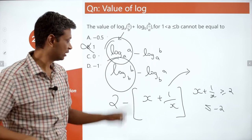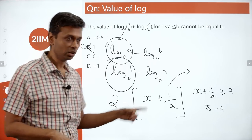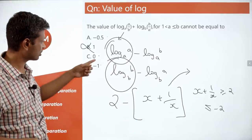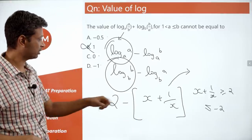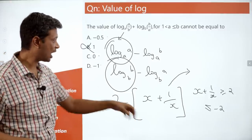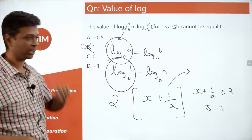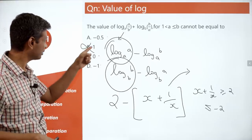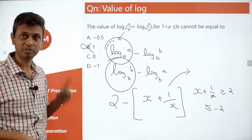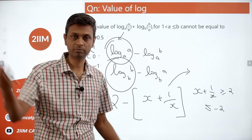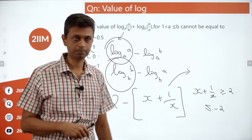If x + 1/x = 2, the expression equals 0. If x + 1/x = 3, the expression equals −1. If x + 1/x = −2.5, the expression equals −0.5 — all possible. But 1 is not achievable. That's the key idea.